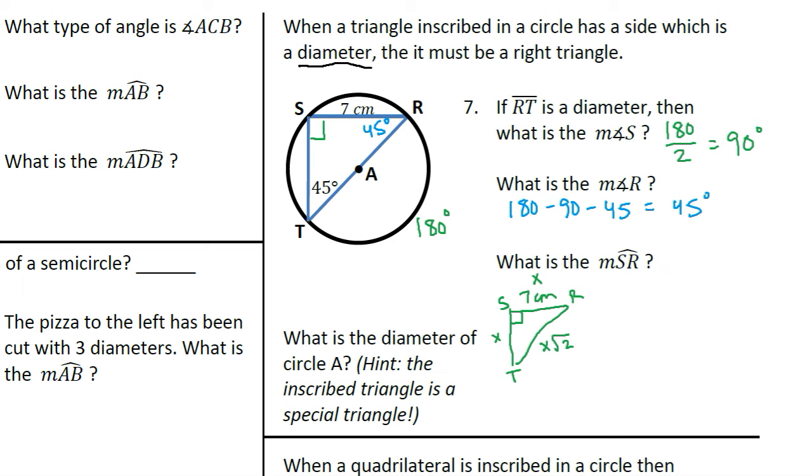If angle T is 45 degrees, then we know we're going to multiply that by two to find the measure of the intercepted arc, which will now be 90 degrees. So this arc SR must be 90 degrees by the rules of inscribed angles.